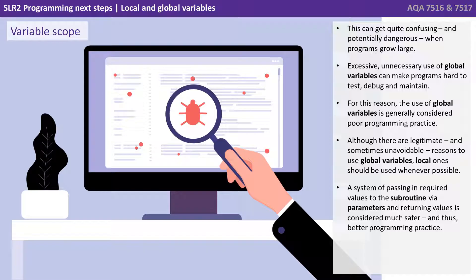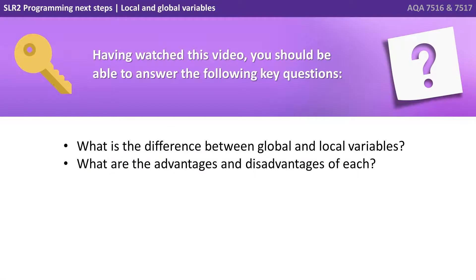A system of passing in required values to the subroutine via parameters and returning values is considered much safer and thus better programming practice. Having watched this video, you should be able to answer the following key questions: what is the difference between global and local variables, and what are the advantages and disadvantages of each?